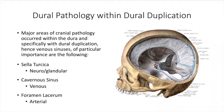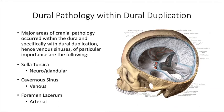Regarding dural pathology: within dural duplication there are major areas of cranial pathology, Dr. Weaver felt, that occurred within the dura and specifically with dural duplication, which gave us our venous sinuses. She felt it was particularly important following the sella turcica for neuroglandular problems. The cavernous sinus was more important for venous problems, and the foramen lacerum more important for arterial problems, although we're going to see a mix of venous, arterial, and neural problems in each of these categories.